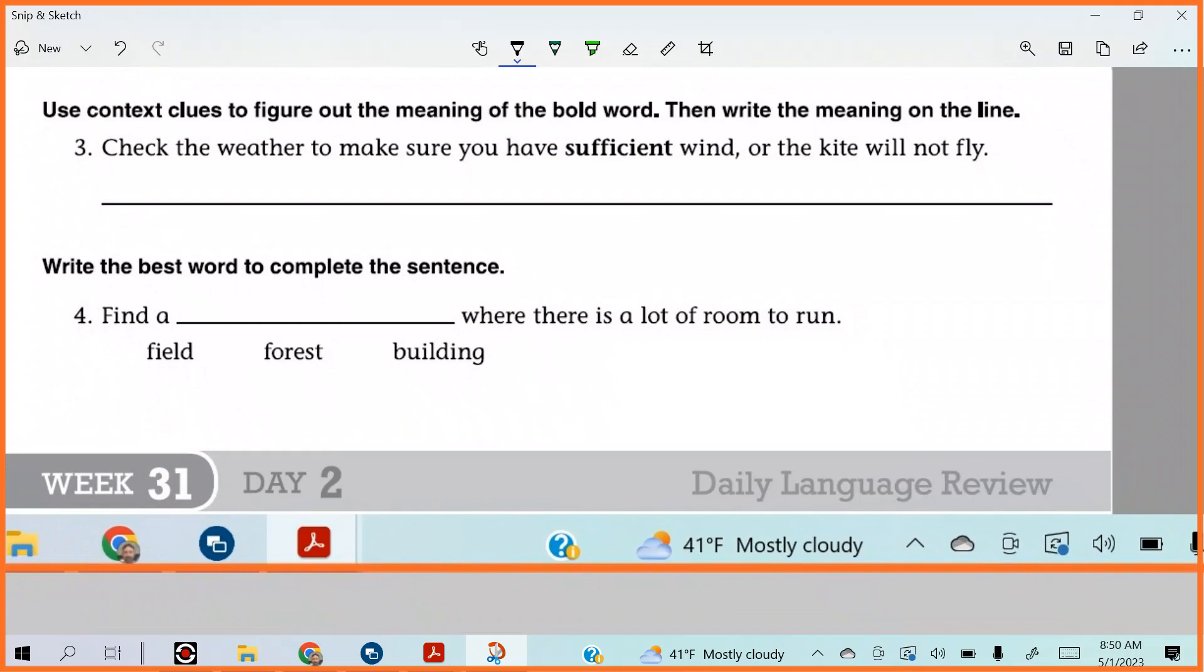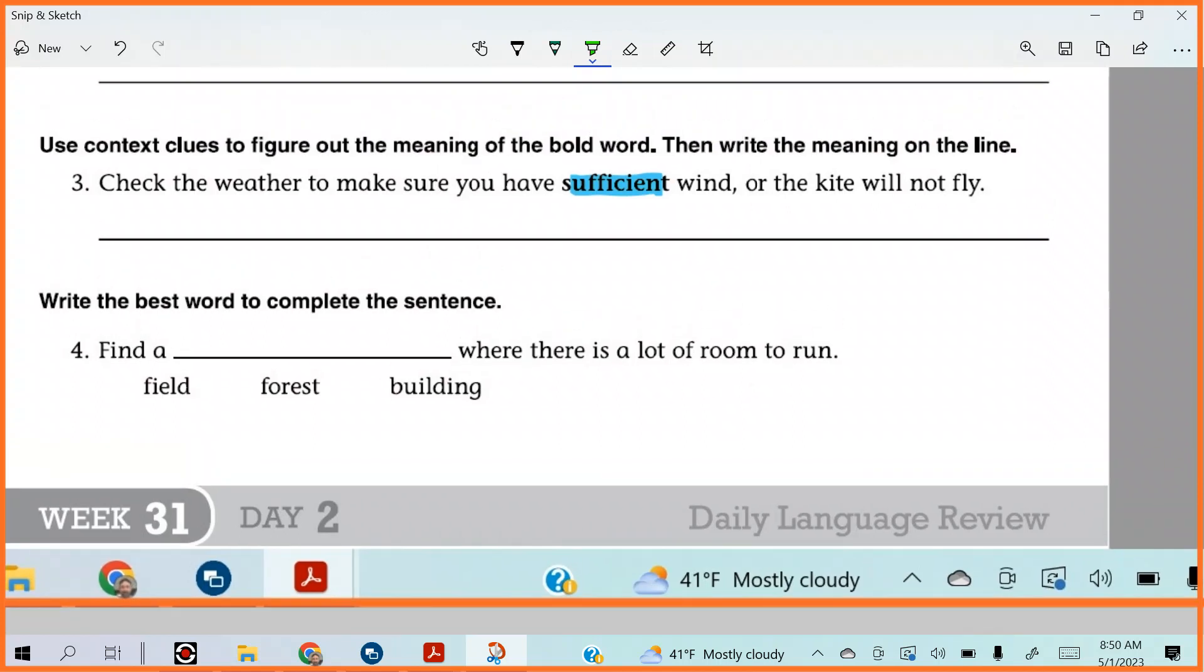It says, use context clues to figure out the meaning of the bold word. So, the word we're looking at right now is sufficient. Check the weather to make sure you have sufficient wind or the kite will not fly. What did you say for sufficient? Good wind. Good enough. Or I'm going to say just the word enough will do it. Sufficient would be enough. Check the weather to make sure you have enough wind. I'd put decent or like strong. Strong, decent would also work. Very good. Those are all good synonyms.